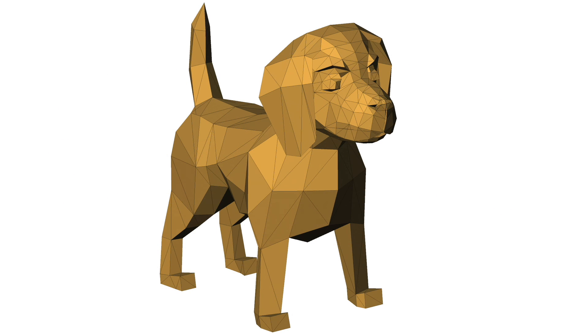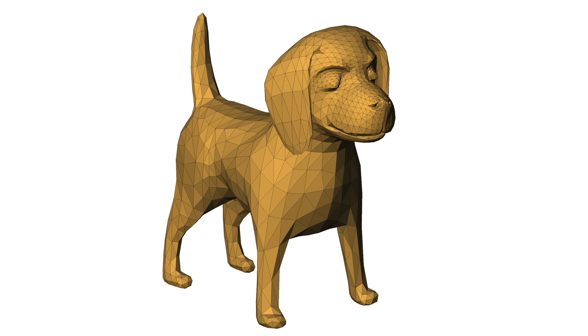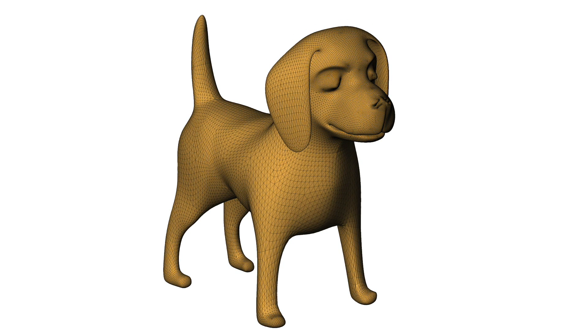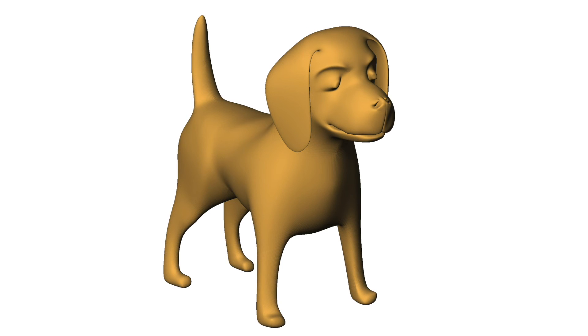Let's try loop subdivision with this boxy dog model. After one iteration, it's already looking better. And if you keep going, we get a nice smooth dog model. Here it is without the triangles. Ta-da! I hope you've enjoyed this video on subdivision surfaces.